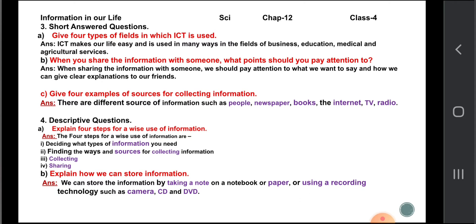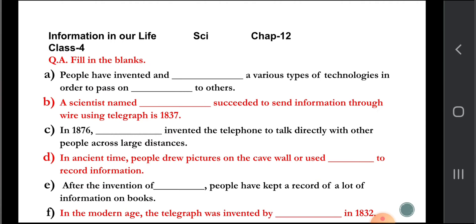The four examples of sources for collecting information are: people, newspapers, books, internet, TV, and radio. Here are some fill-in-the-blank exercises — you need to figure these out by reading the textbook.